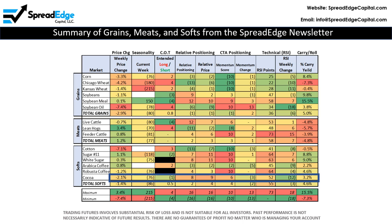Looking at the Outlook summary, there are three things that jump out at me. First is seasonality, second, commitment of traders, and third, relative price and positioning. I will review each of these indicators in more detail on the following pages.